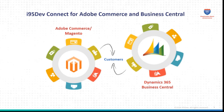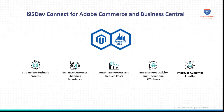In this video, we'll quickly demonstrate how i95 DevConnect automates Customer Information Sync between Adobe Commerce and Business Central ERP, helping you build a 360-degree customer view. This unified view enhances shopping experiences, customer loyalty, and operational efficiency through targeted campaigns, personalized experiences, seamless multi-channel communication, and self-service portals.